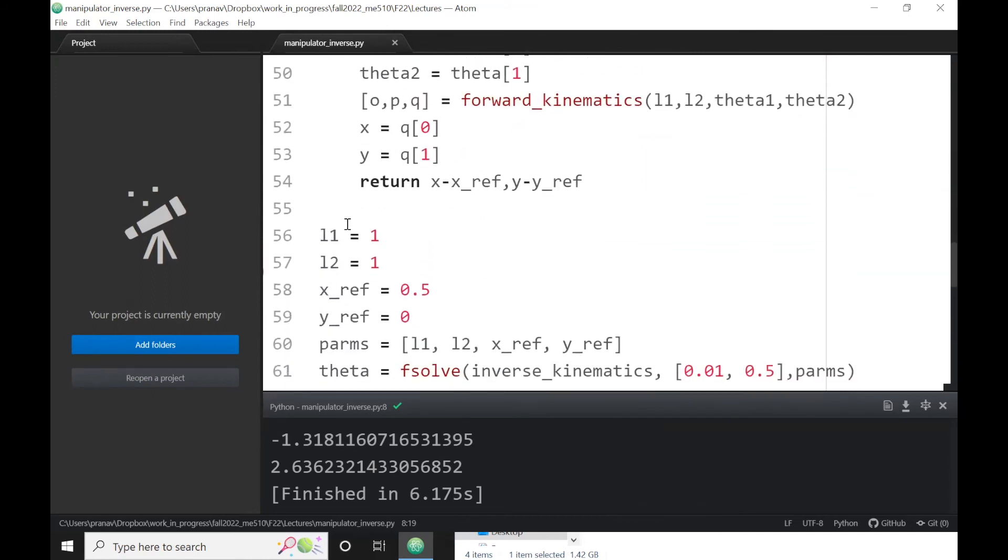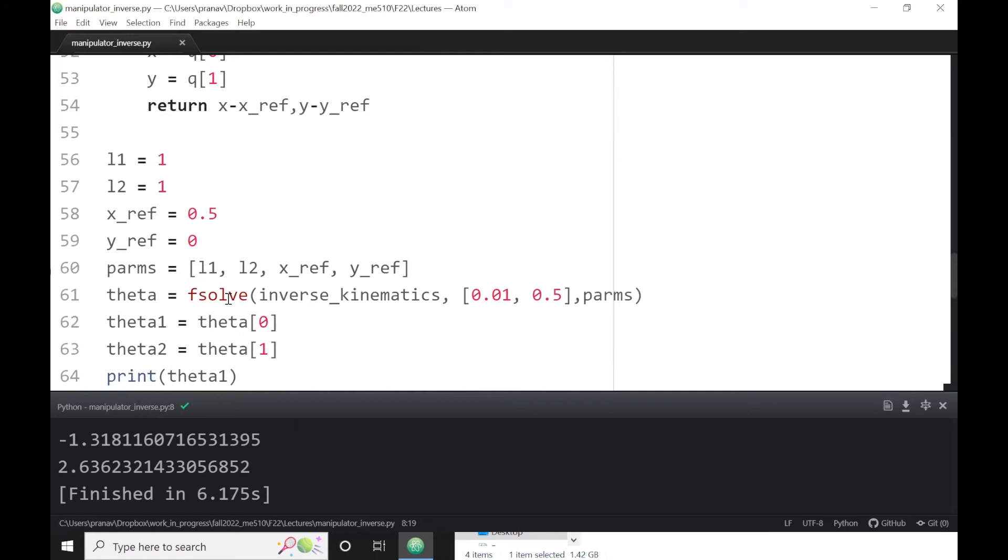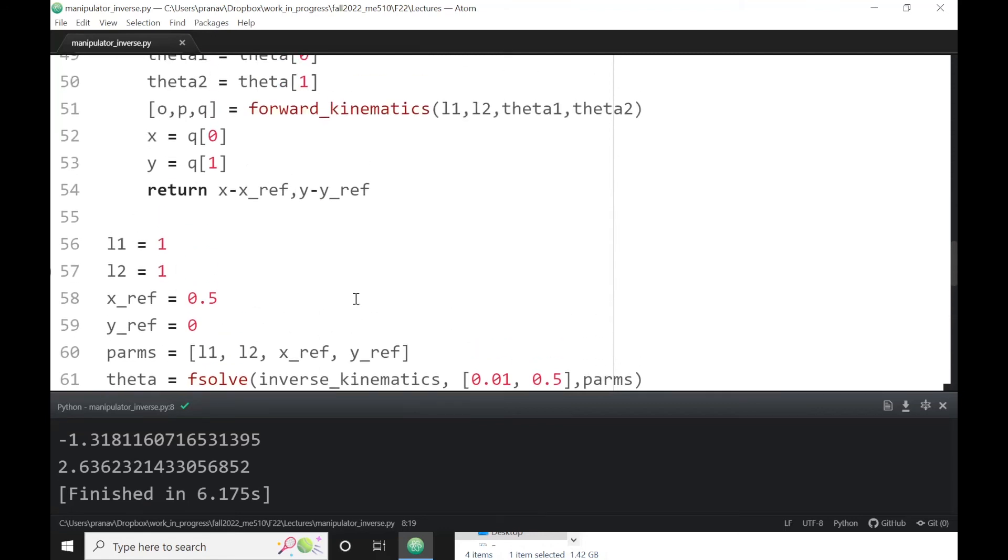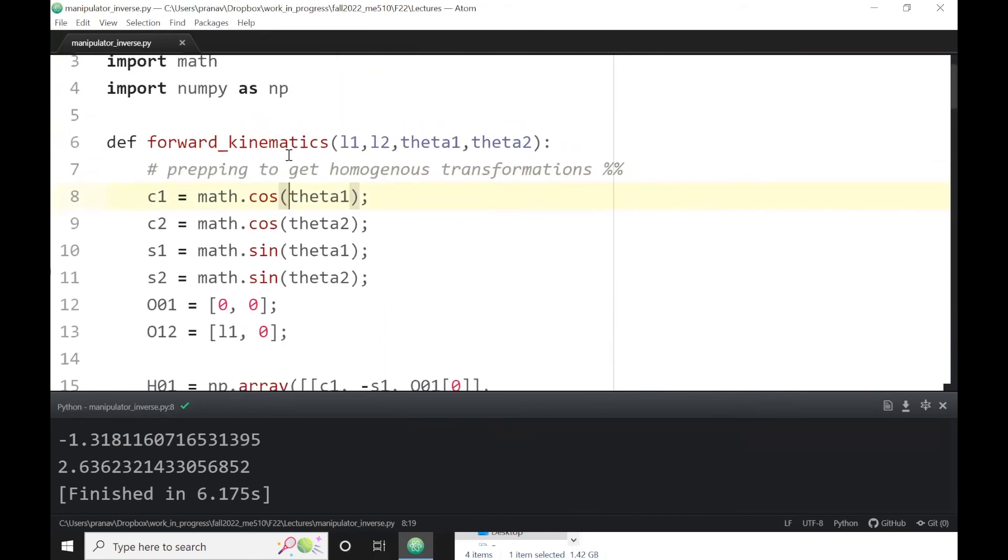Here is how you do it. So I took the code from the forward kinematics to give me the end effector, and then I just put it inside the fsolve to get the values for θ₁ and θ₂. Let me find where I've defined the parameters. Okay, so l₁, l₂ is one, x_ref, y_ref - x_ref is 0.5, y_ref is zero, so I wanted it on the x-axis at 0.5. Those are my parameters. I passed them to fsolve. My function is called inverse_kinematics. I need to give some guess, so I started with 0.01, 1.5 for these two angles. I passed the parameters which are these numbers.